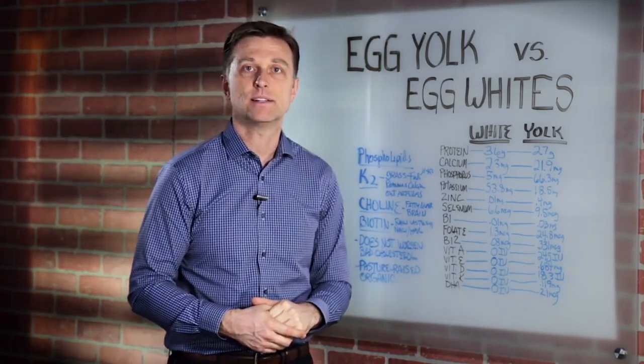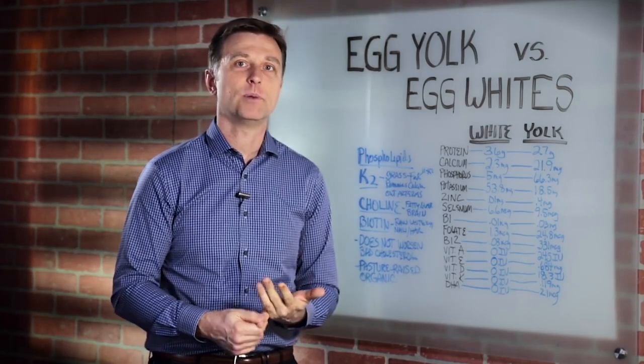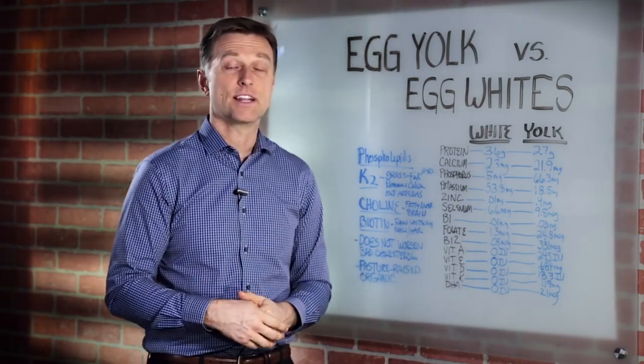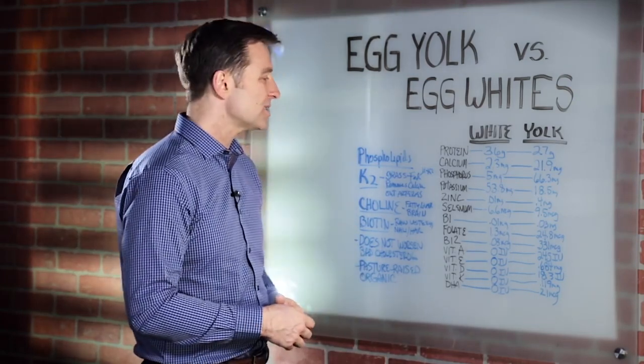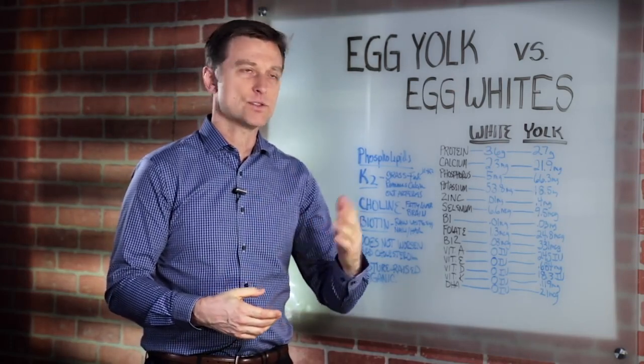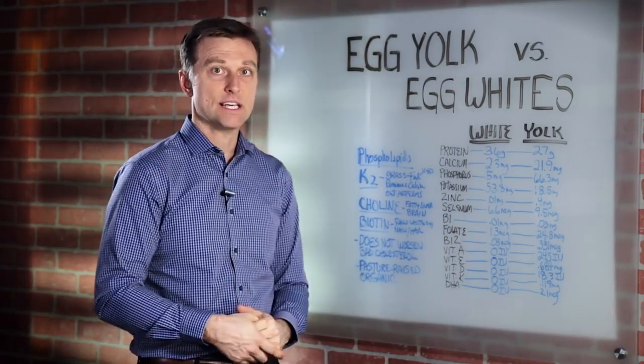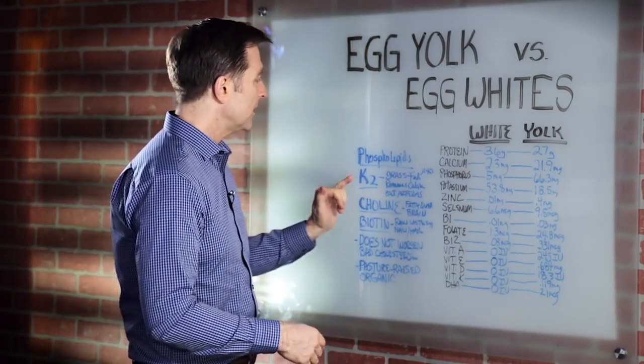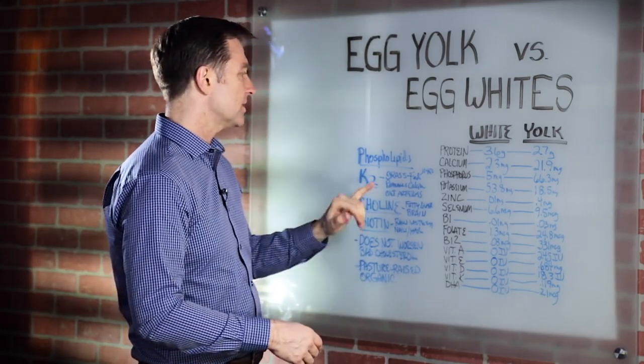So we need vitamin K2. Vitamin K2 is a fat-soluble vitamin. And it's in goose liver. It's in butter. It's in fattier things that are grass-fed. It's also, you can get it in natto. It's like a fermented soybean, but it's pretty nasty tasting. You can get it in a supplement. But vitamin K2 is actually in egg yolks if it's grass-fed.